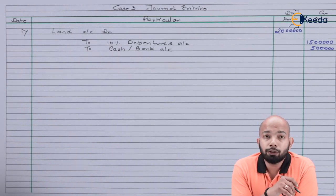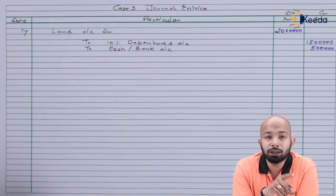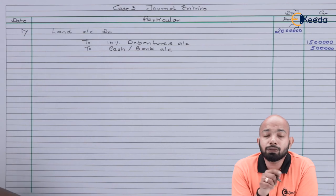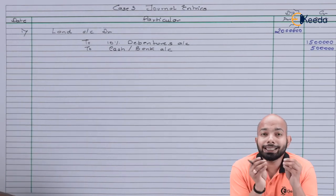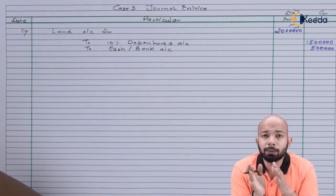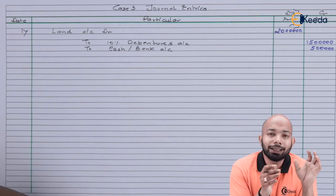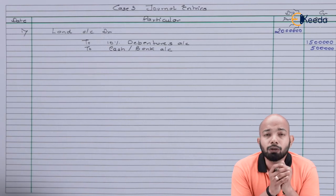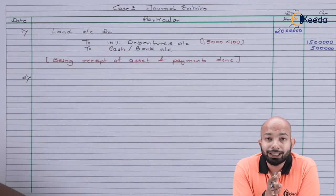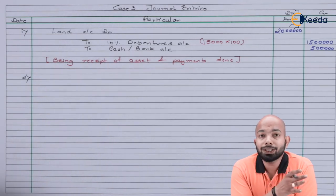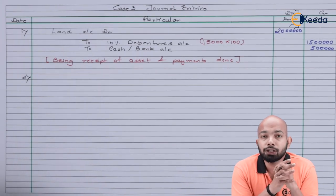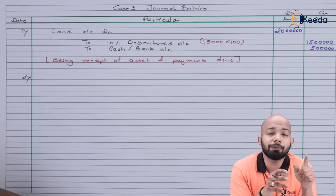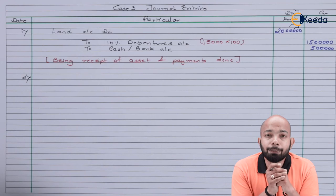15,000 debentures were issued for the asset payment (15,00,000 ÷ Rs.100 face value = 15,000 debentures). Out of the total 50,000 debentures, 15,000 are already issued. The remaining 35,000 10% debentures of Rs.100 were sent out for public subscription — application Rs.50, allotment Rs.50. Receipt of application entry: 35,000 × Rs.50 = Rs.17,50,000.